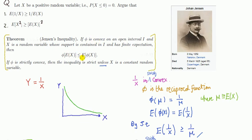What does this say? This says that the mean of the convex transformation of the random variable is at least as big as the convex transformation on the mean of the random variable.